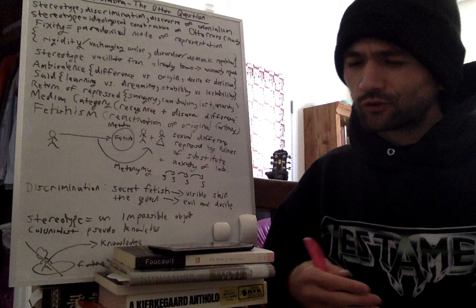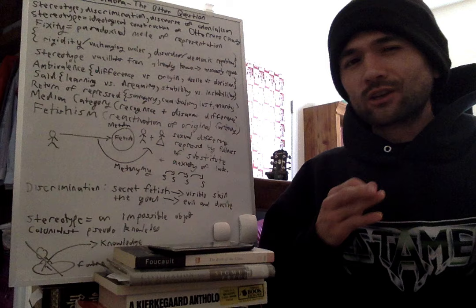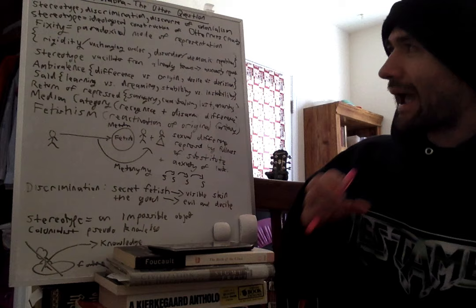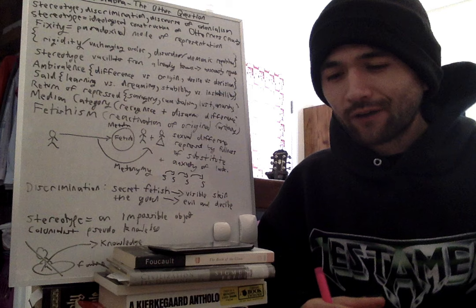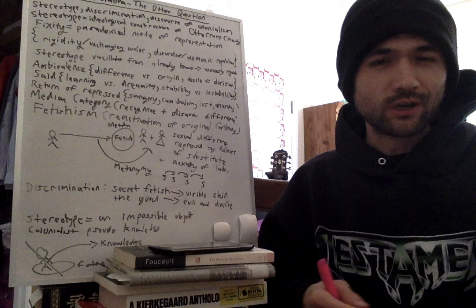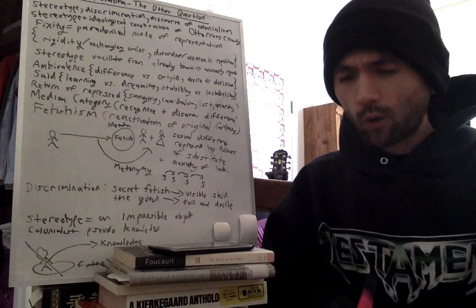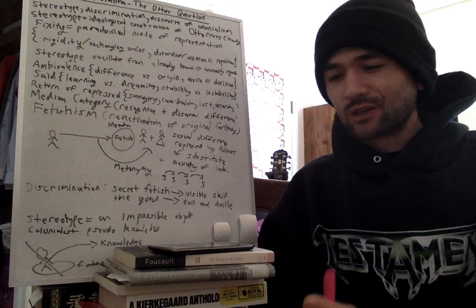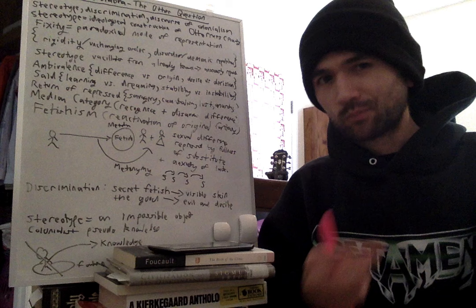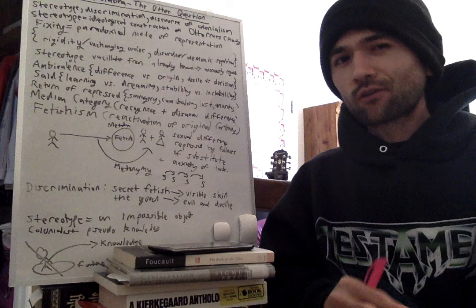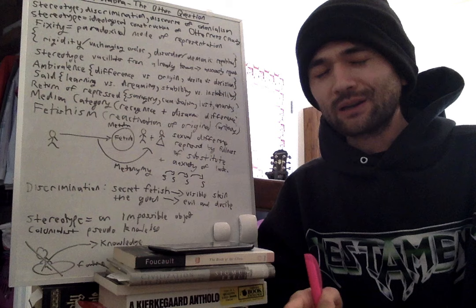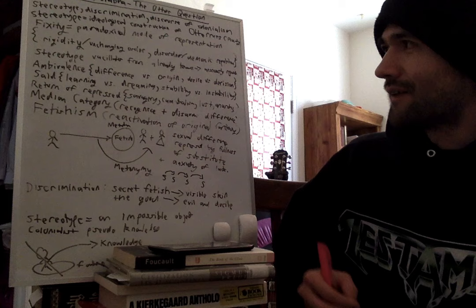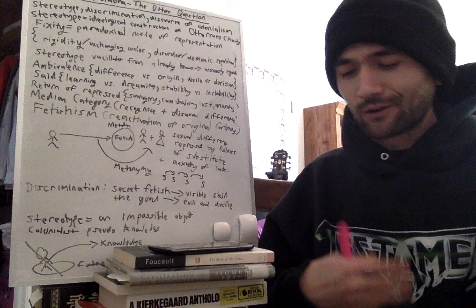The paradox of fixity in postcolonial discourse is that in trying to provide both the rigidity of an unchanging order and the disorder of the other as inherently characterized by violent tendencies which could explode at any moment into savagery and cannibalism—if we weren't there, they would just fall into anarchy—but also the need for constant repetition. It's never established enough, the knowledge of the other. It constantly has to be repeated once again. He's going to show that stereotype, far from being just a snapshot that tells you everything you need to know, vacillates from the already known to the anxiously repeated impossibility of it ever being fully known enough.